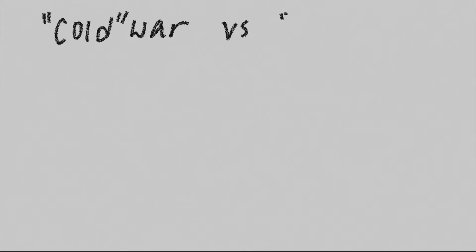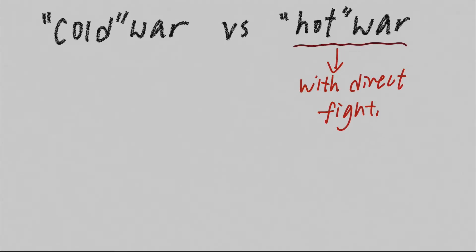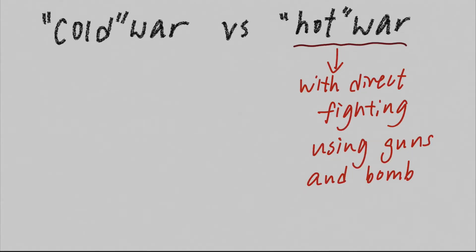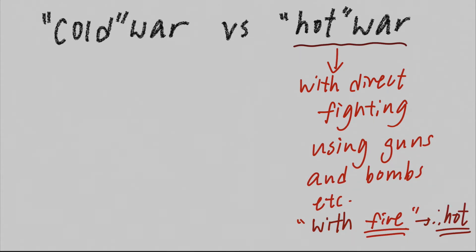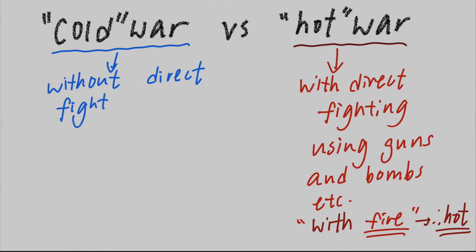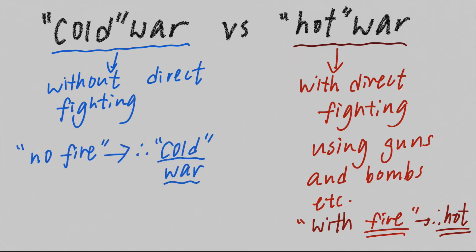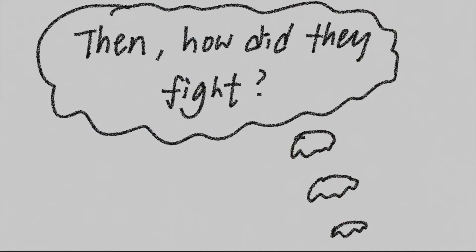So, why is this called Cold War? For hot war, it means that the countries in conflict fight directly with each other using guns and bombs — therefore, there's fire and it's hot. Whereas in Cold War, there's no direct fighting, so it's a Cold War.